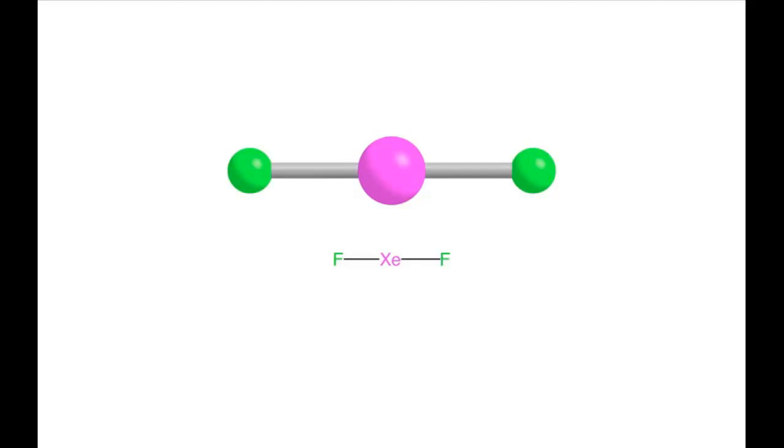You can explain the existence of this molecule using a partial molecular orbital scheme just by considering the interactions between the pz orbitals on the three atoms.